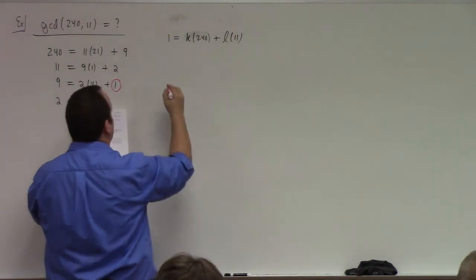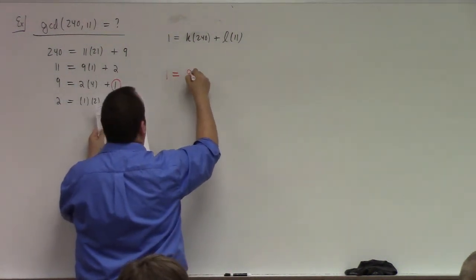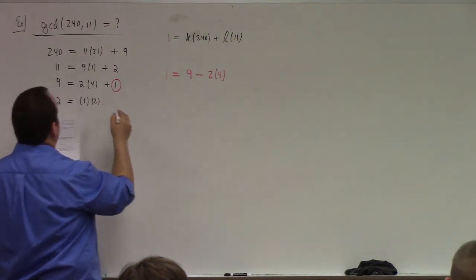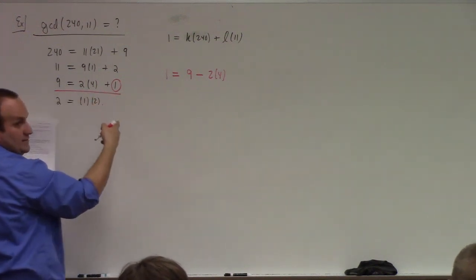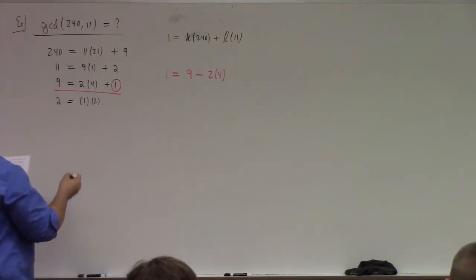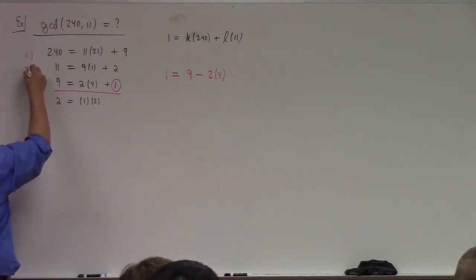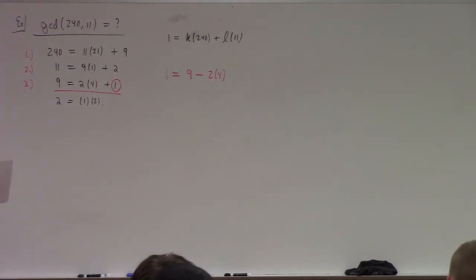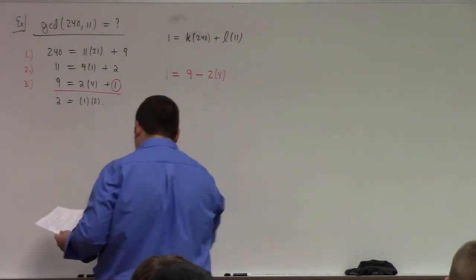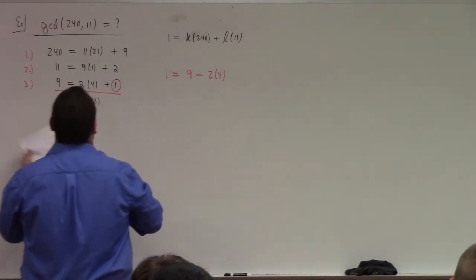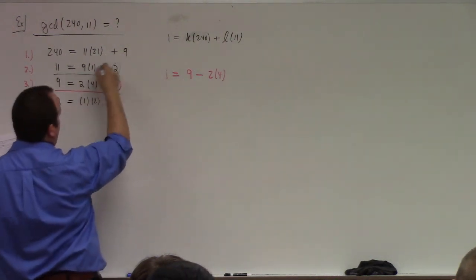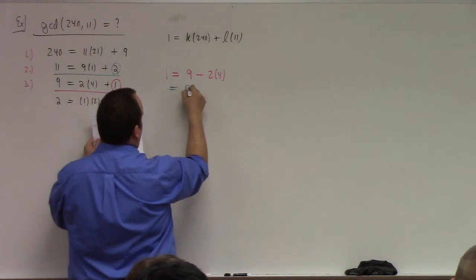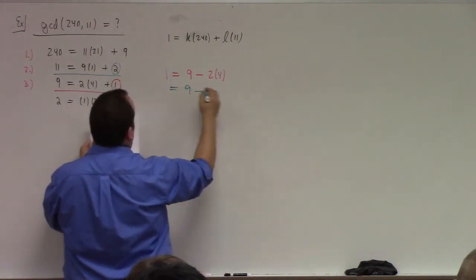So: 1 is equal to 9 minus 2 times 4 — I'm solving step 3 for the GCD. Then I solve step 2 for 2 and plug it in: 1 equals 9 minus (11 minus 9 times 1) times 4.